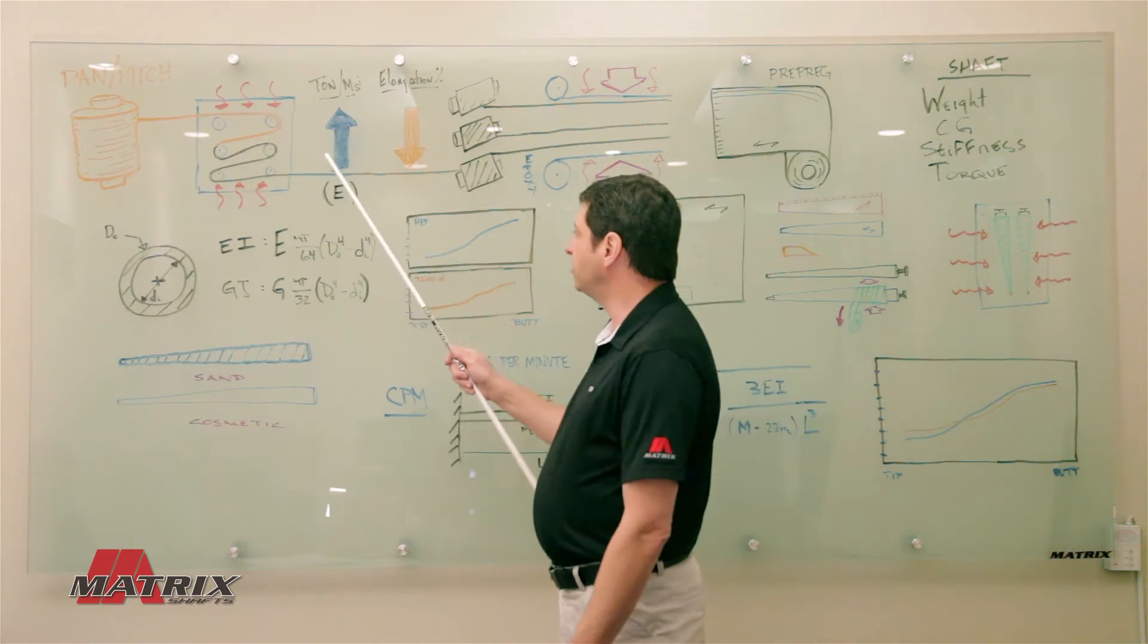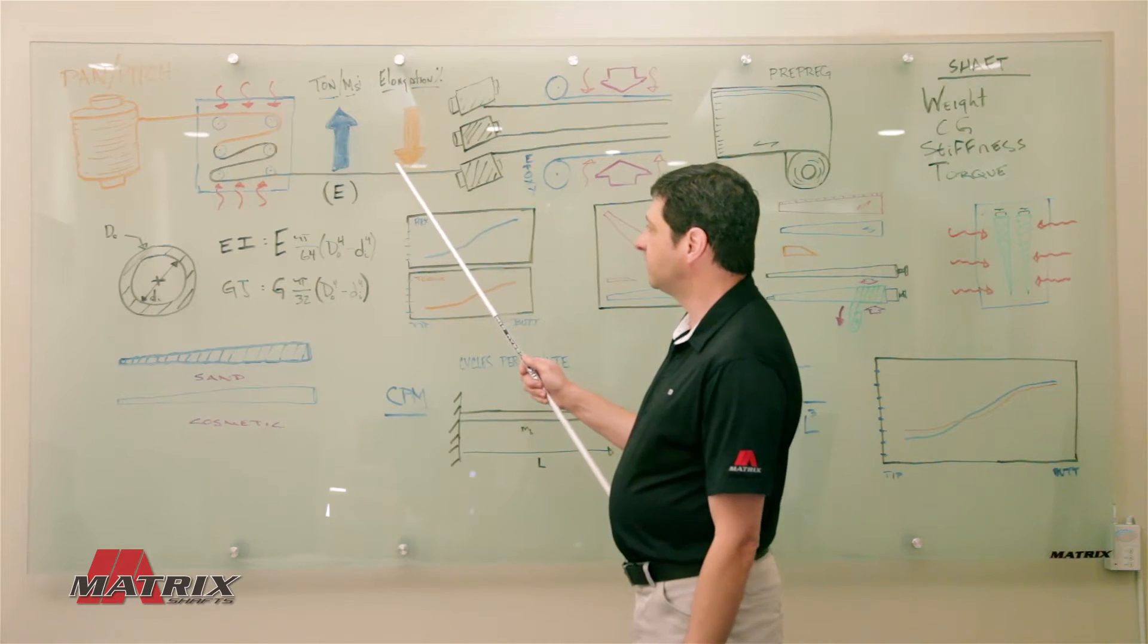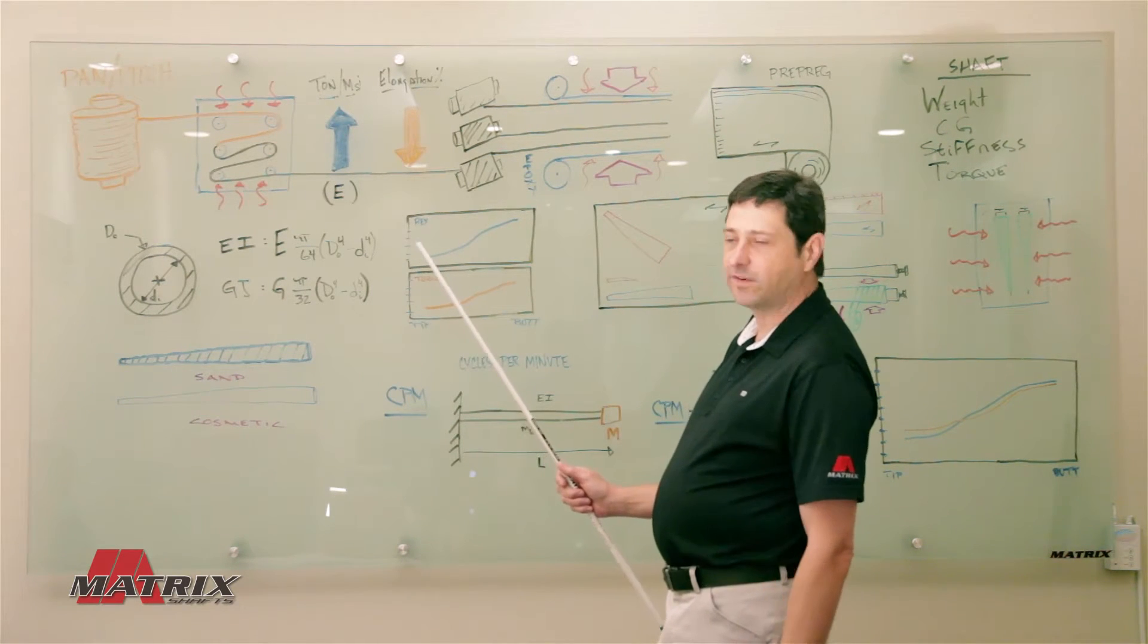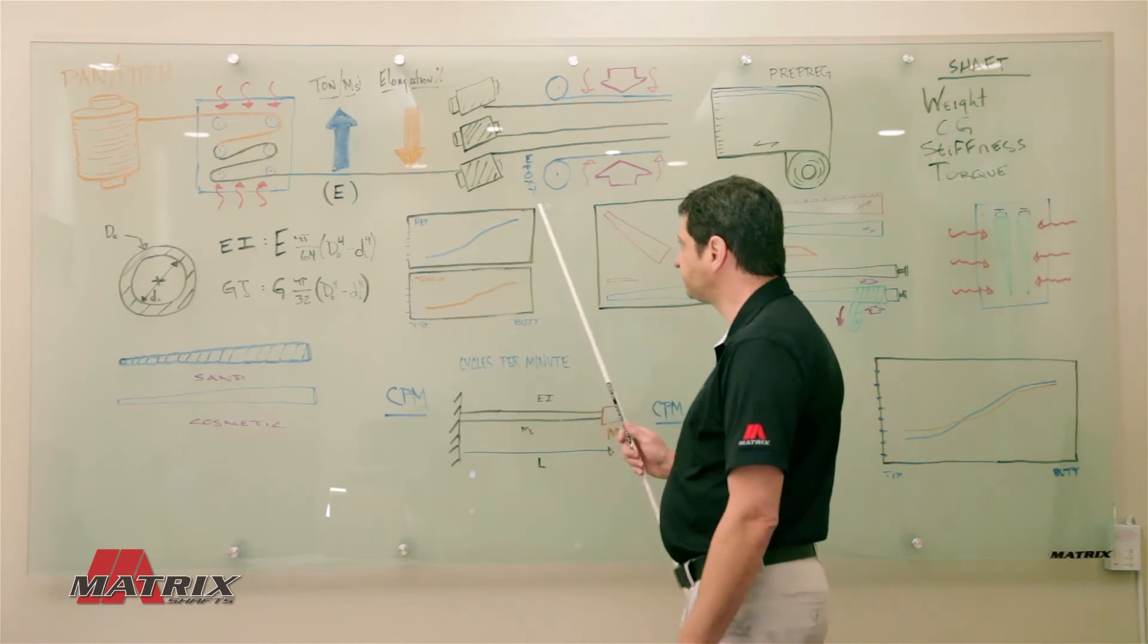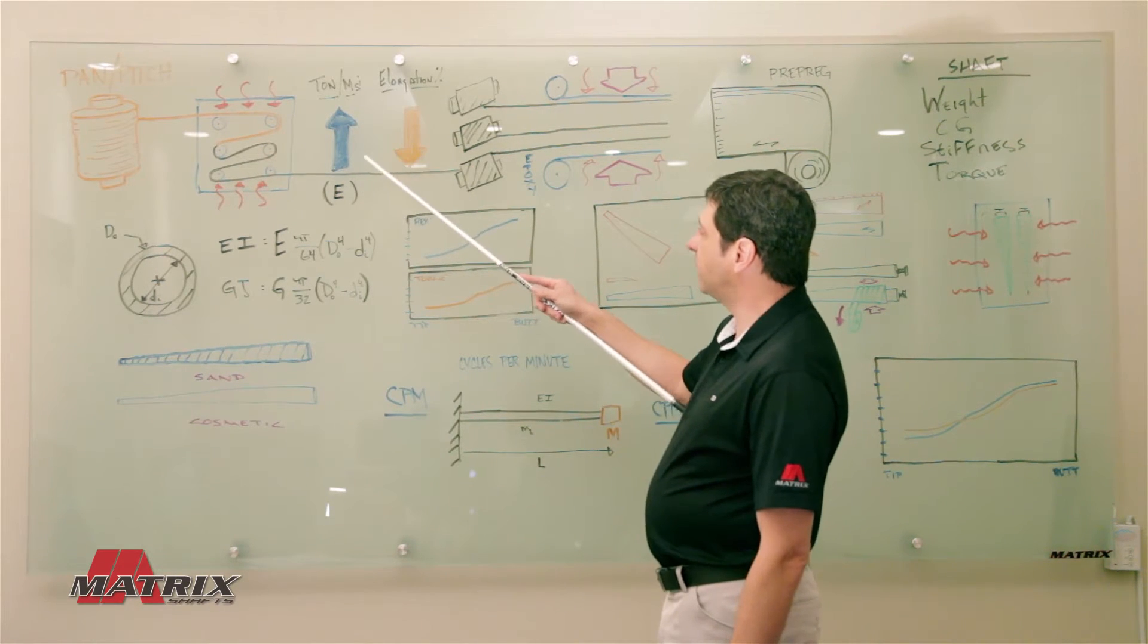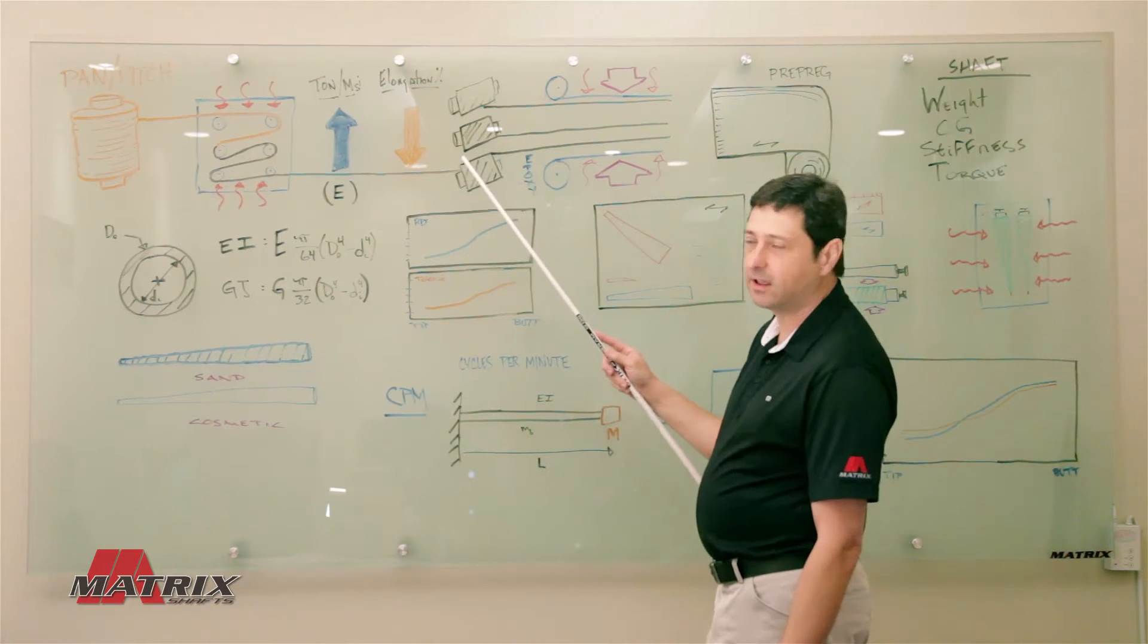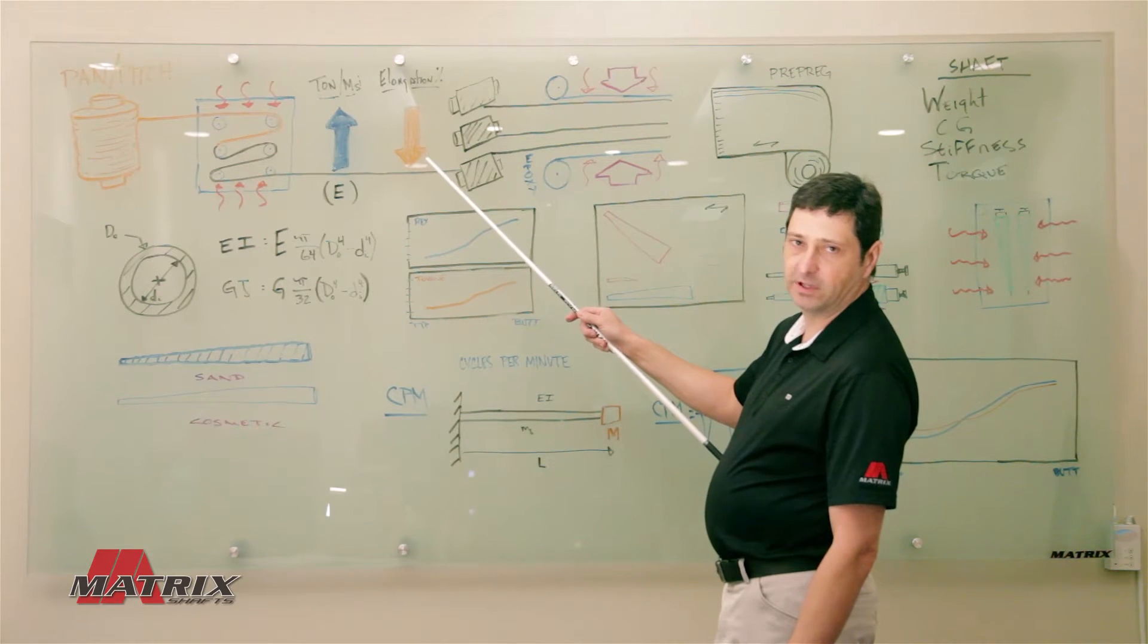As you increase the tension, you can try to stabilize and align all the carbon molecules in the fiber. By doing that, you can change the stiffness or the elastic modulus of the material. This is what you'll hear people refer to as a ton or an MSI of a carbon fiber, which represents your standard, intermediate, or high modulus materials. Now, as we increase the modulus, the elongation to failure of that fiber will decrease. That means the stiffer you make a fiber, the more brittle it becomes.